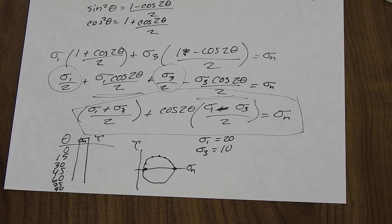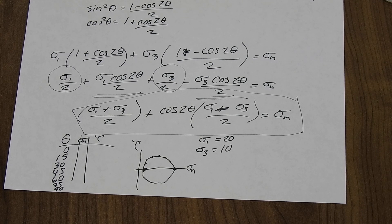The Mohr circle allows us to estimate stresses on any orientation of a plane, as long as we're given the angle, sigma_1, and sigma_3, or we have sigma_n and the shear stress. Hope that derivation helped. Thanks.